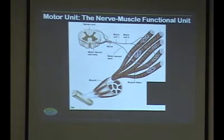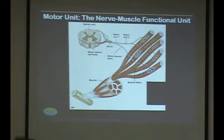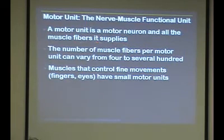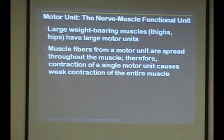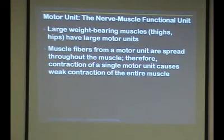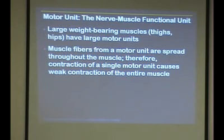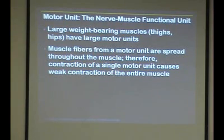It's like a transmission that only has two gears versus one with many gears. So a motor unit is one nerve and all the muscle fibers it supplies. Large weight-bearing muscles have large motor units — many muscle fibers per nerve fiber. Fine control muscles have few muscle fibers per nerve fiber. One motor unit contracting gives a weak contraction to the muscle overall, but if you recruit many motor units, you use many nerve impulses to get the whole muscle to contract fully.